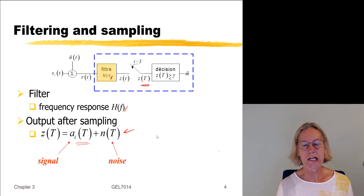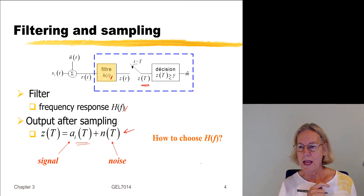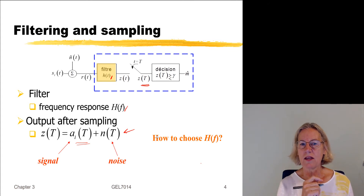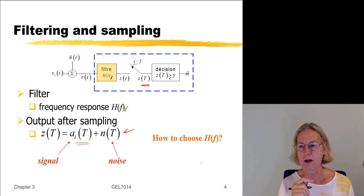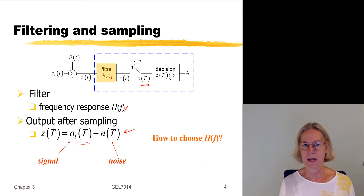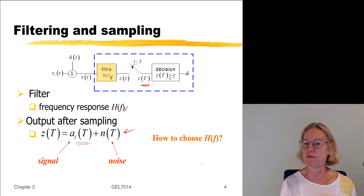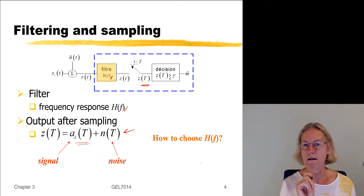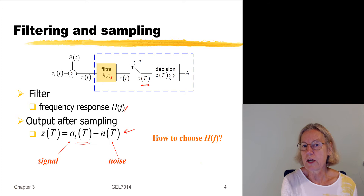The signal and the noise contribute equally to the statistics, and we pose the question: is there a choice of filter which gives better performance? In particular, we want to favor the signal and diminish the noise, and that is really what this whole section about matched filters is about. So far in our analysis we really have a free choice of this filter, and today we're going to discuss what would be a good choice.